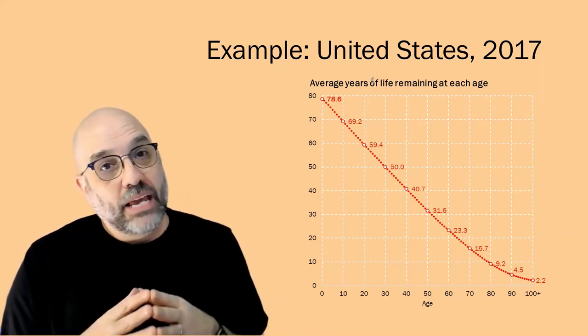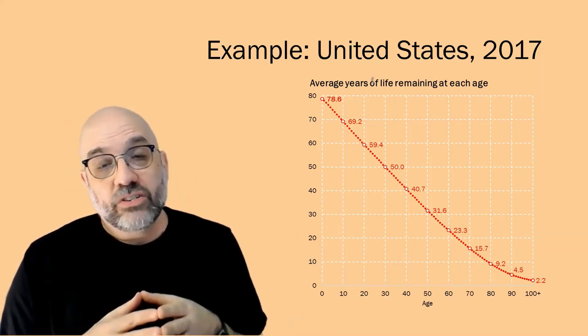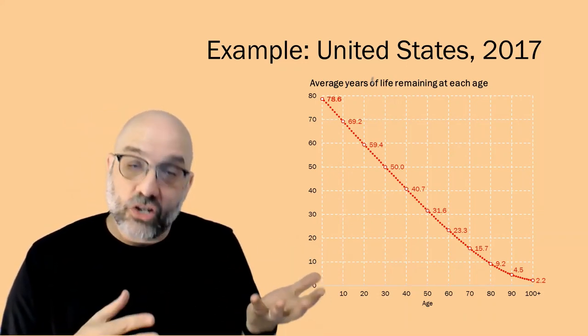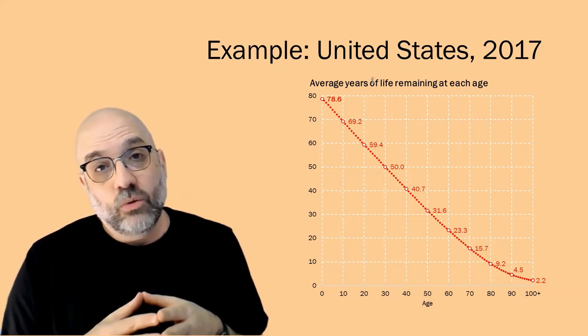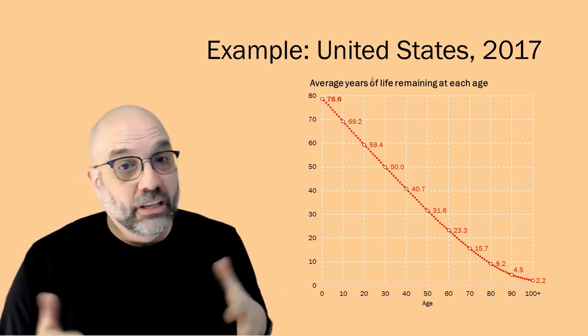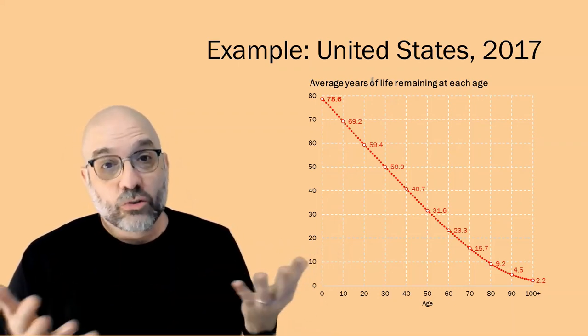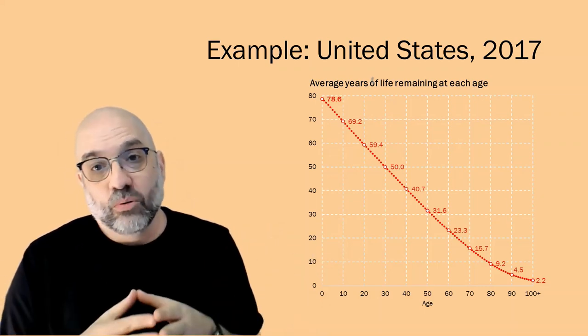If people live all the way up to age 70 in this hypothetical cohort, you see on average they will have 15.7 years left to live, which will get them to age 85.7. In fact, some people live past age 78.6 altogether, and those people obviously are expected to live beyond age 78.6.